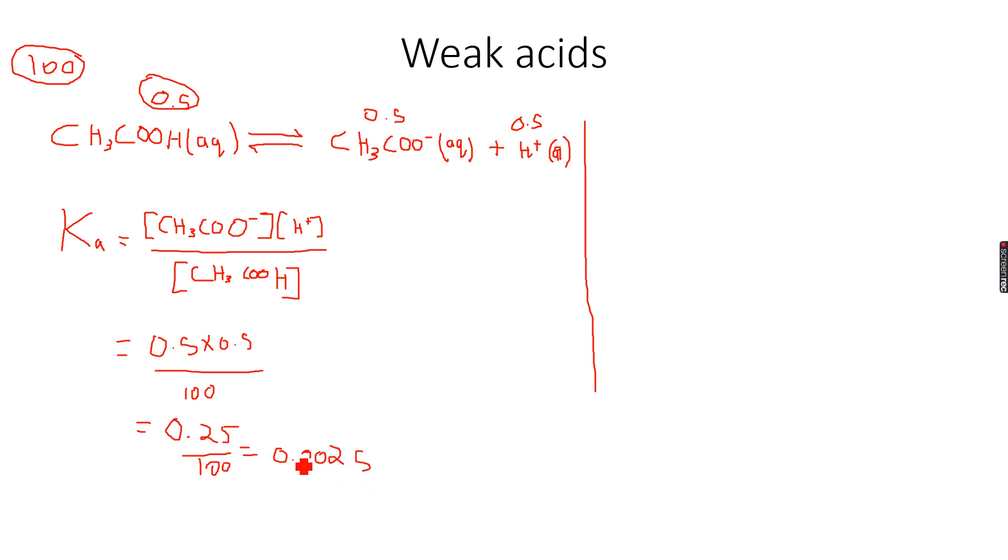This is the value of Ka: 0.0025. The unit will be mole per dm³ because the overall unit in the numerator is mole² per dm⁶ and in the denominator it is mole per dm³. Mole per dm³ and mole per dm³ get cancelled out, so we are left with mole per dm³. This will be the unit of Ka for this example.